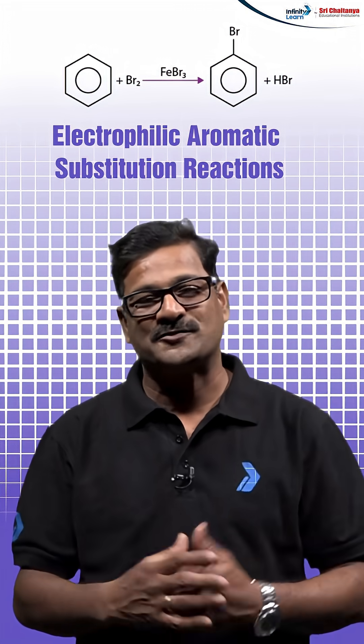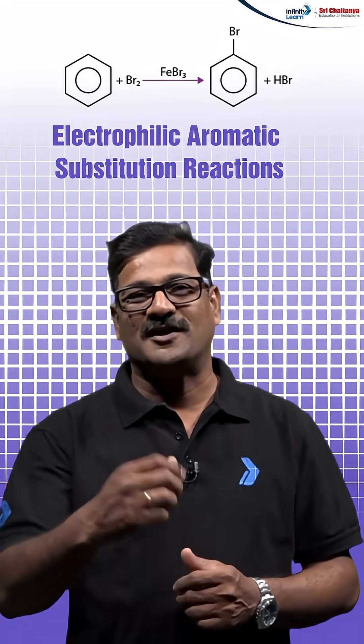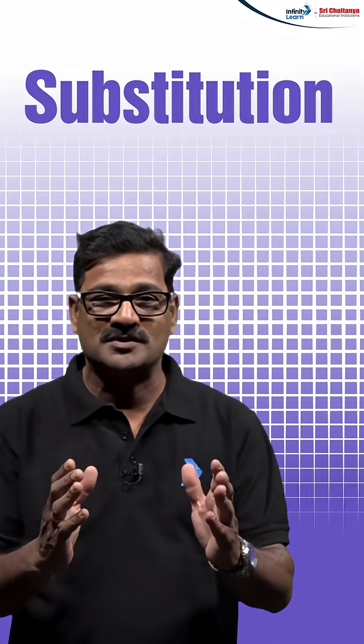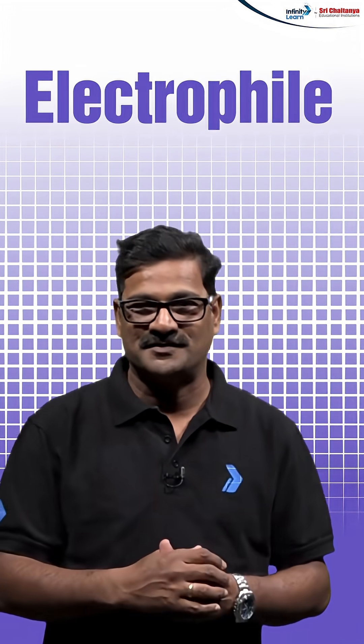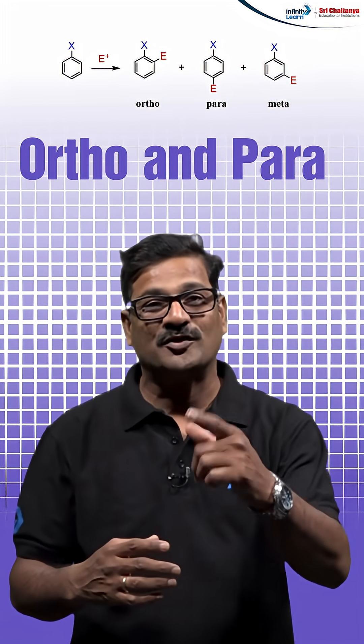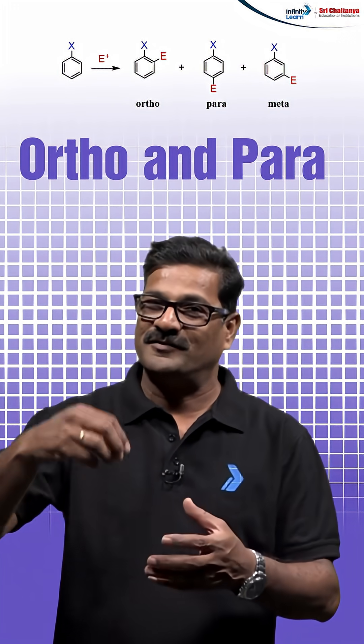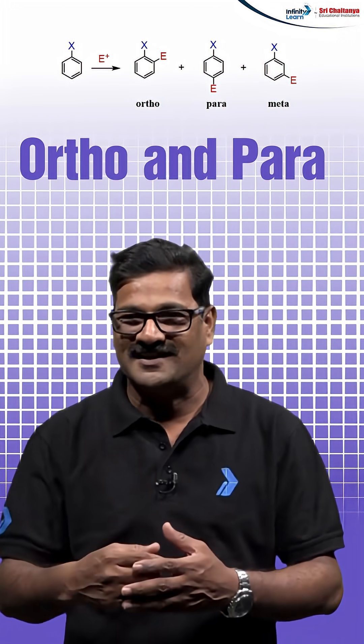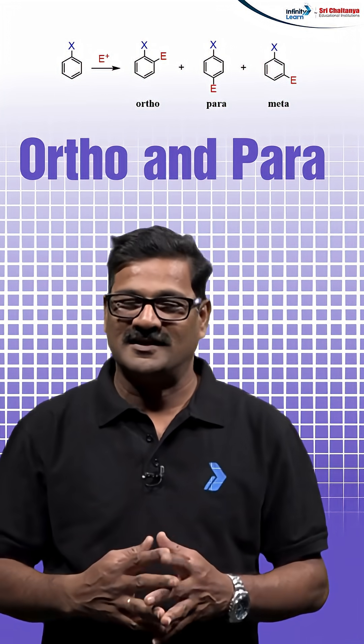When it comes to benzene, electrophilic aromatic substitution reactions are important, where substitution of one of the hydrogens by the electrophile you have to check. The directing influence on the substituted benzene ring you have to follow. The trick is: whenever an electron-releasing group is there on the benzene, the product is going to be ortho and para. If an electron-withdrawing group is there, the product is going to be a meta director.